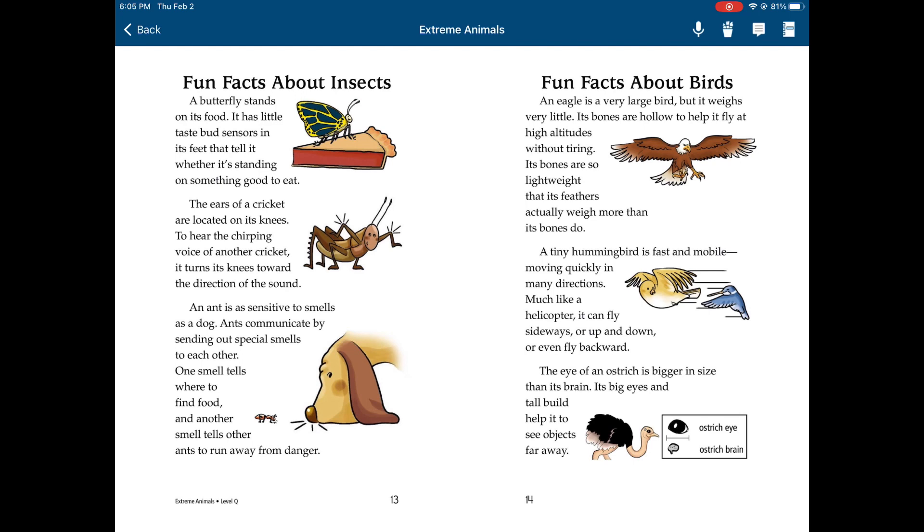Fun facts about birds. An eagle is a very large bird, but it weighs very little. Its bones are hollow to help it fly at high altitudes without tiring. Its bones are so lightweight that its feathers actually weigh more than its bones do. A tiny hummingbird is fast and mobile, moving quickly in many directions. Much like a helicopter, it can fly sideways, or up and down, or even fly backward.